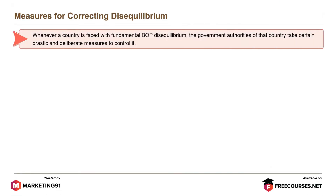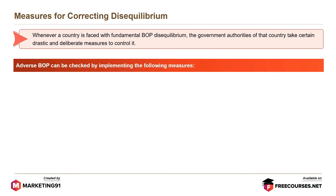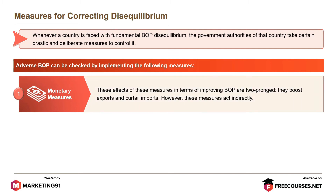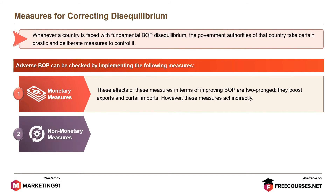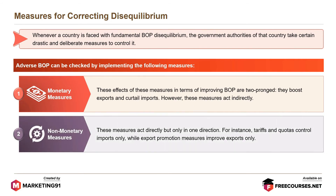Whenever a country faces fundamental BOP disequilibrium, the government takes certain drastic and deliberate measures to control it. Adverse BOP can be checked by implementing the following measures: monetary measures, which boost exports and curtail imports but act indirectly; and non-monetary measures, which act directly but only in one direction — for instance, tariffs and quotas control imports only, while export promotion measures improve exports only.